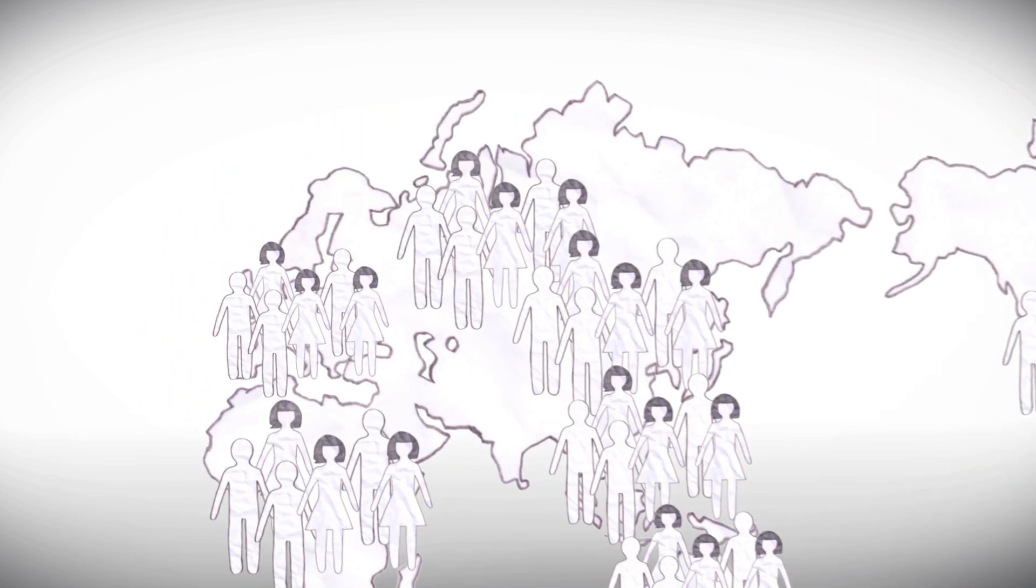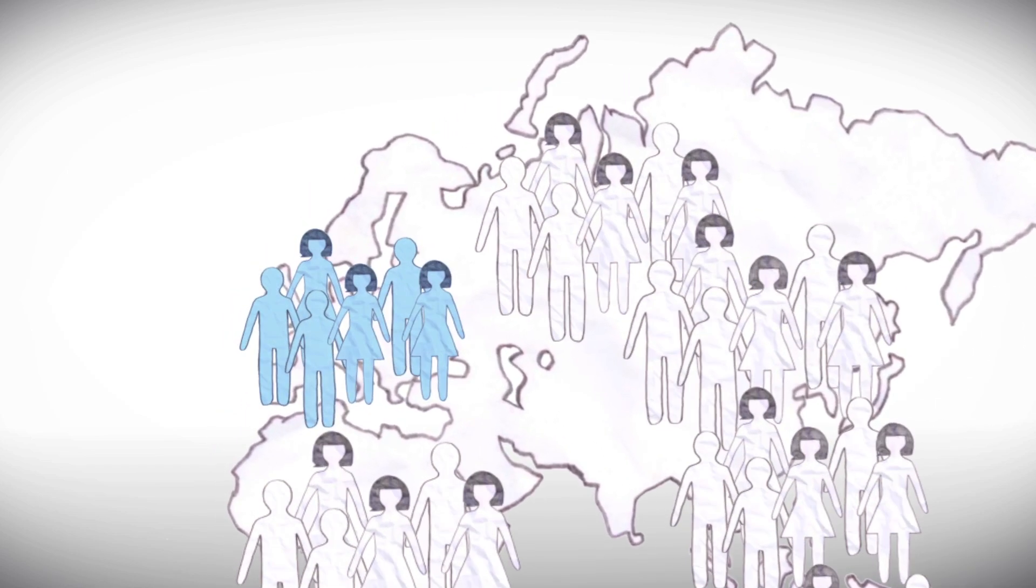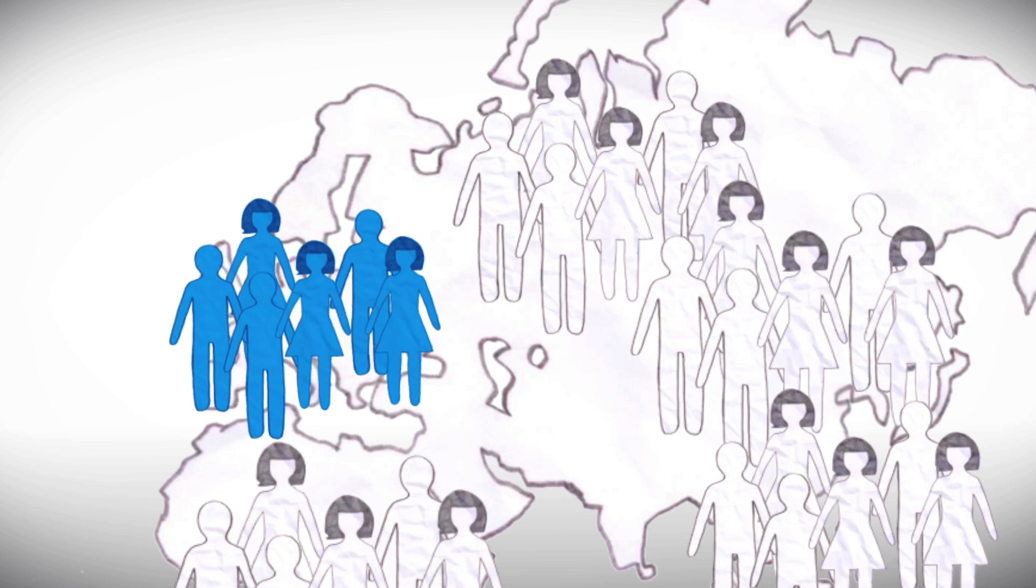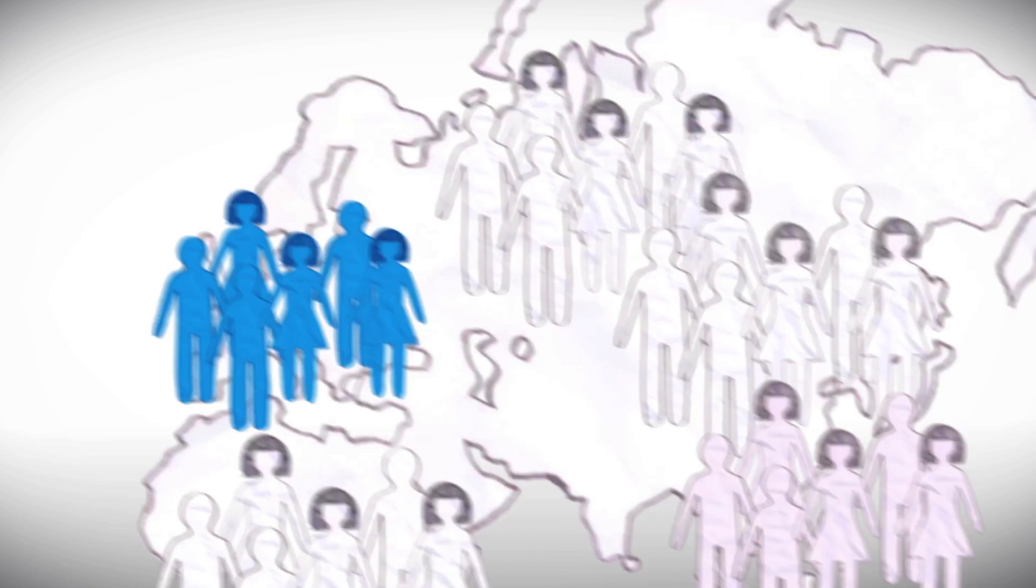Over time, this created regional patterns of genetic variation. So the people living in, say, northern Spain had more markers in common with each other than they did with people in Indonesia.